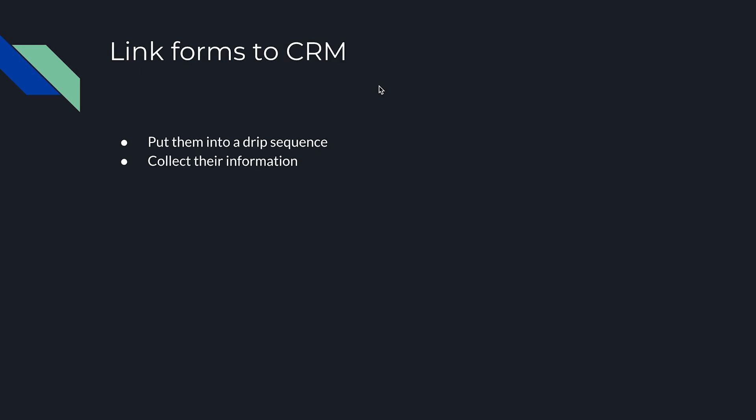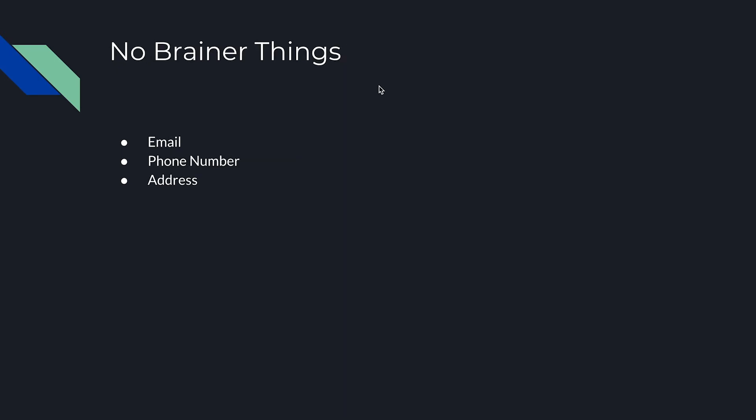All your forms need to link to a CRM — ActiveCampaign, Infusionsoft, MailChimp, there are many options. After they fill out the form, they should immediately get an email: 'Thanks for downloading' or 'We got your request.' Collect name, email, and phone — that gives you the ability to send emails, texts, and call them. Also, make sure your email, phone number, and address are super easy to find on your website. I can't tell you how many sites I've visited where I couldn't find basic contact information.